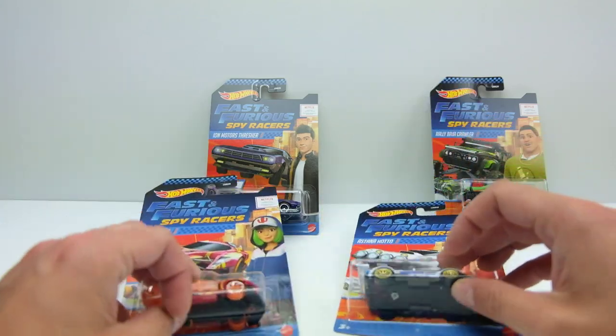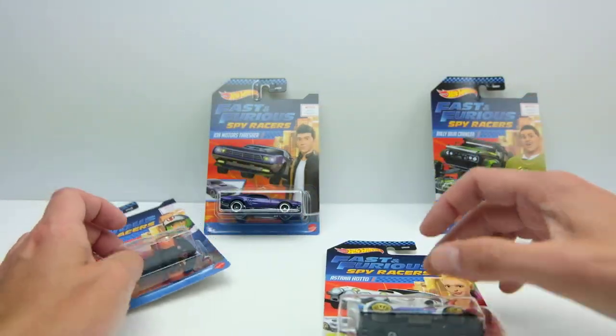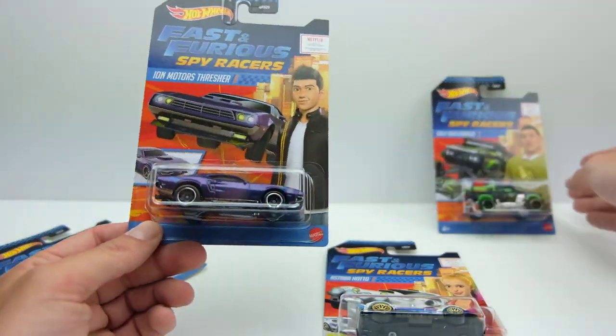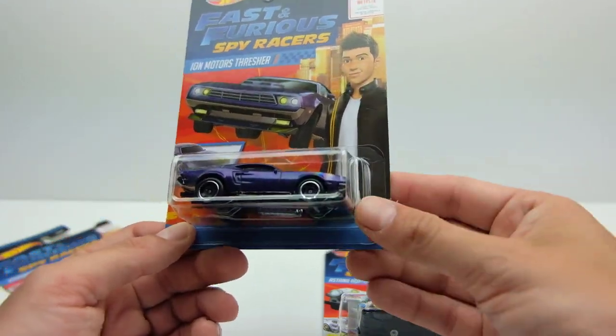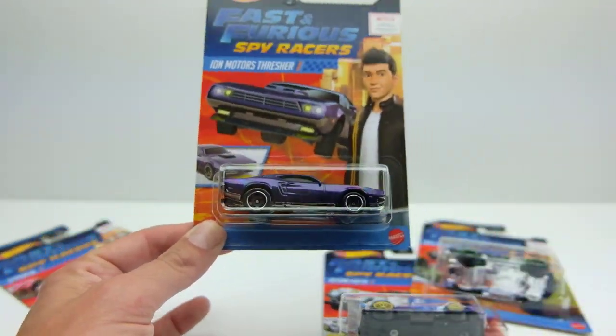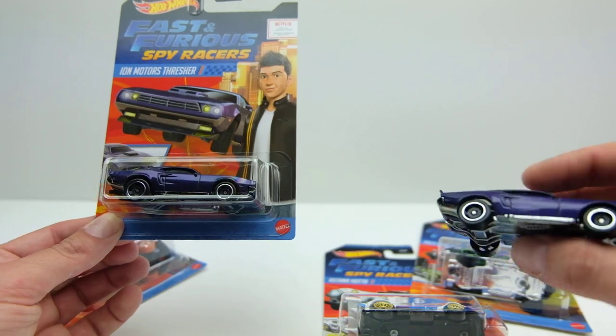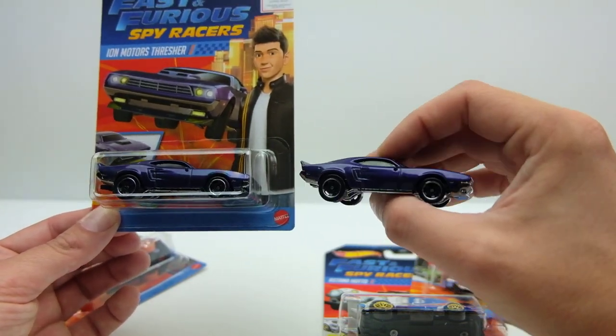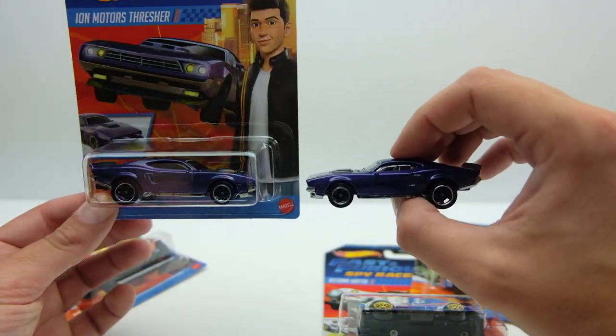So what these are, these are the four main character cars from the Fast and Furious Spy Racer series. Hot Wheels has done this one before, the Ion Motors Thresher, and I did an unboxing video of it. Here it is, it's an awesome mainline. This is such a cool-looking car.